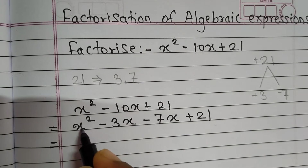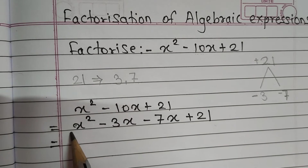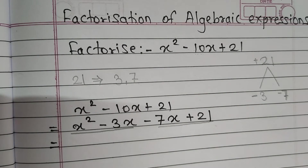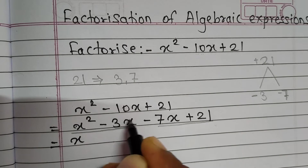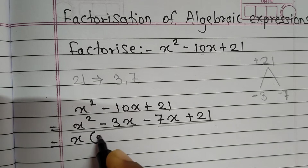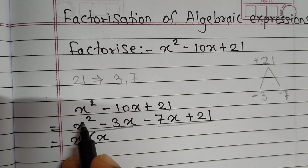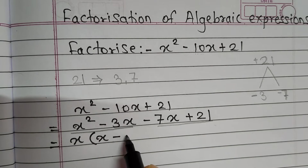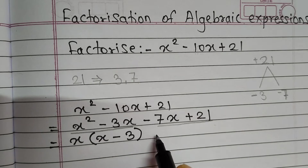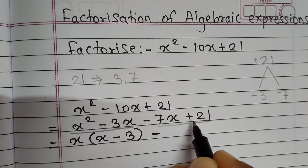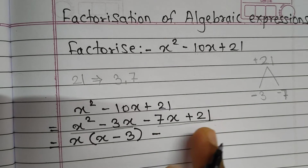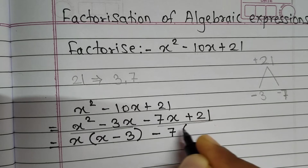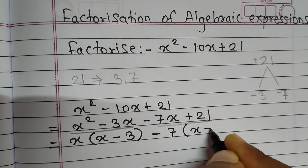This is equal to: we consider x² and minus 3x as one pair, and minus 7x and plus 21 as another pair. From x² and 3x, x is common; the remaining part is x minus 3. Then from minus 7x and 21, we take 7 as common; the remaining is x minus 3.